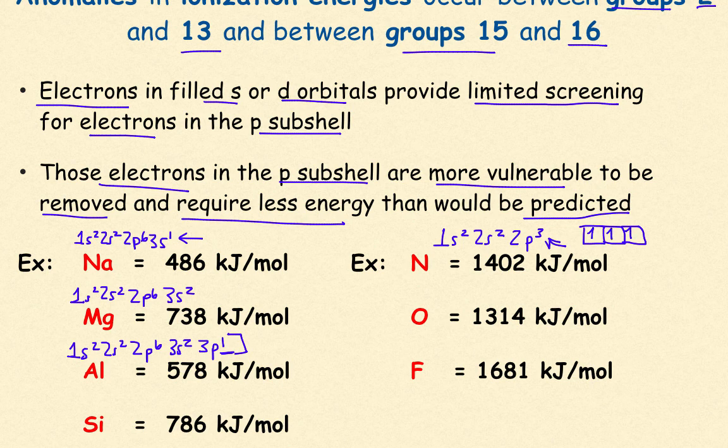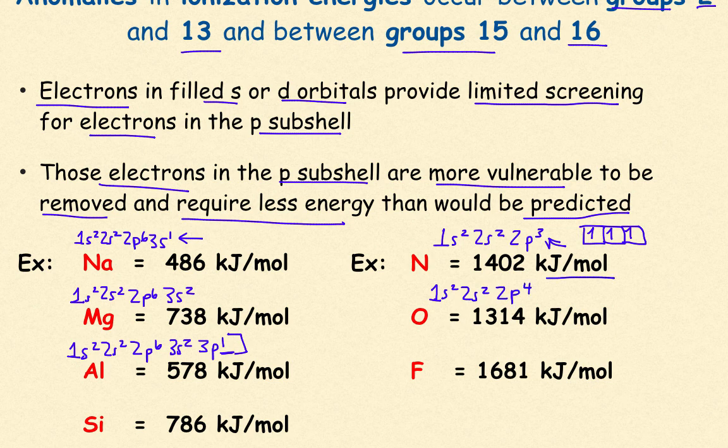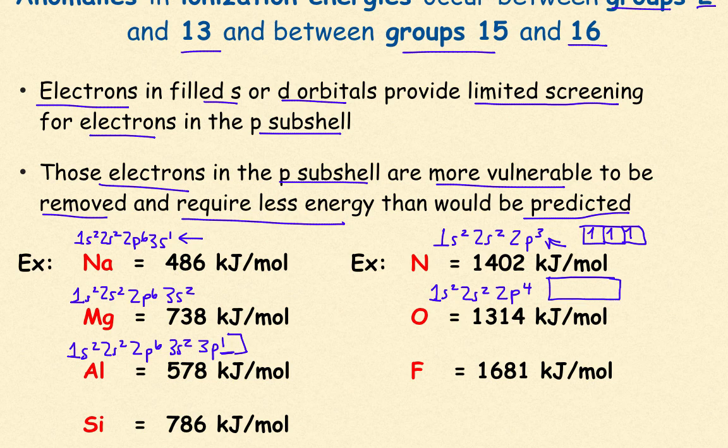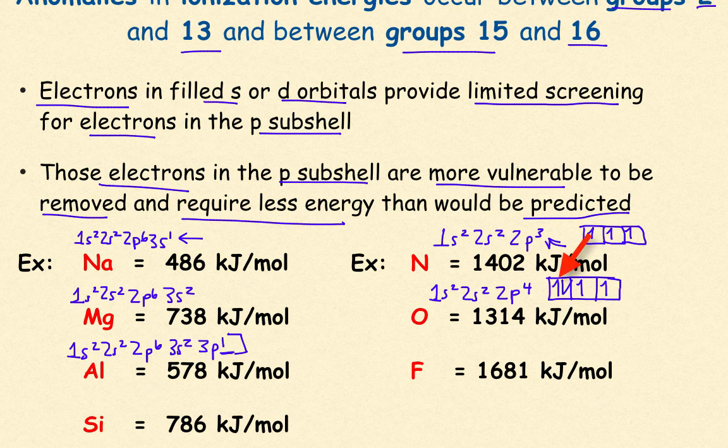But when you go to oxygen, the electron configuration is 1s2, 2s2, 2p4. Now if I draw my boxes out like so, we're going to have 1, 2, 3, 4. And right here, in this box right here, representing those two electrons, because there's two electrons in that orbital, there's going to be repulsion. And because there is repulsion, it's going to be easier to remove one of those electrons other than the stable electrons all with the same spin.